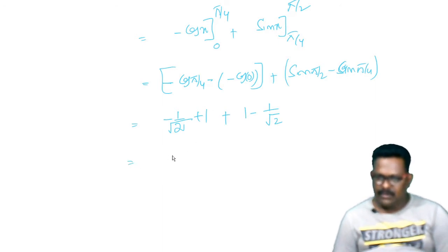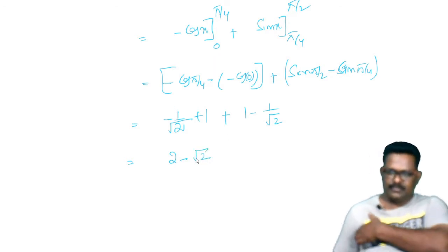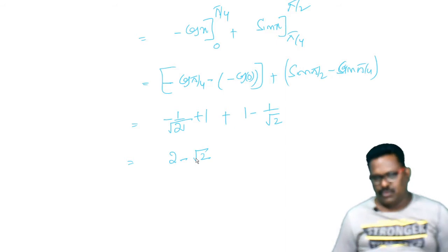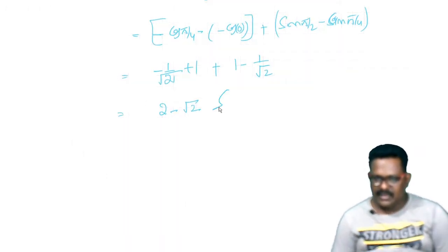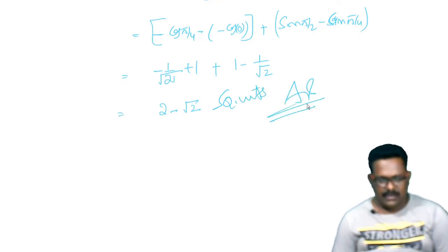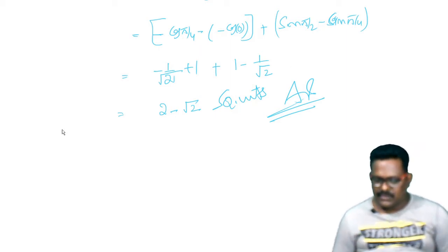Simplifying: 1 + 1 = 2, minus 1/√2 minus 1/√2 = minus 2/√2 = minus √2. So the answer is 2 minus √2 square units. That is the answer for question number 13.